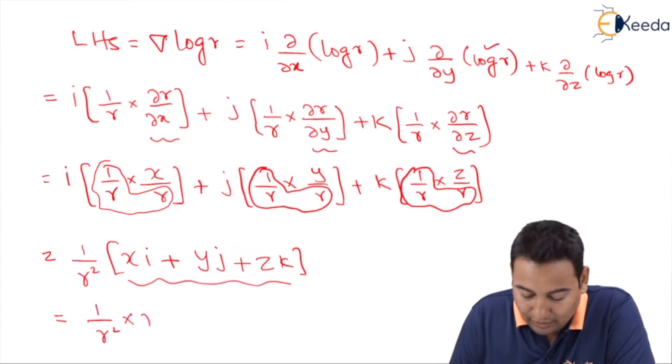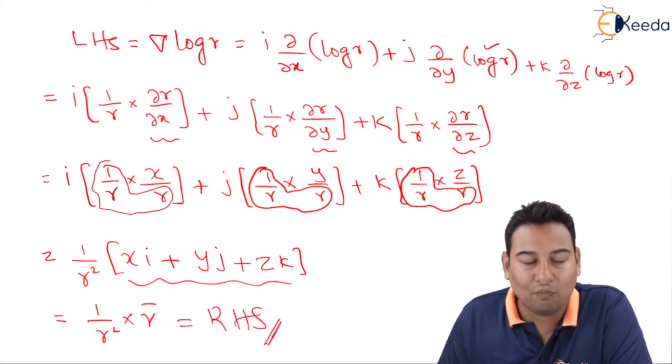That is 1 upon r square into r bar, which is equal to your RHS. We are done with the proof. Hope you understood, thank you.